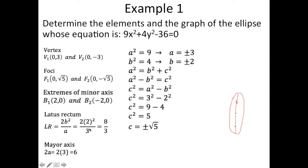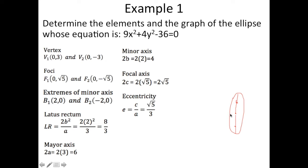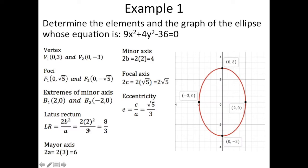The latus rectum is 2b²/a = 8/3. Half of that is the distance from the focus to each side of the ellipse. The major axis is 2a = 6. The minor axis is 2b = 4. The focal axis is 2c. The eccentricity is c/a = √5/3. The graph shows co-vertices at (−2, 0) and (2, 0), vertices at (0, 3) and (0, −3), foci approximately at (0, ±2.2), and center at (0, 0).